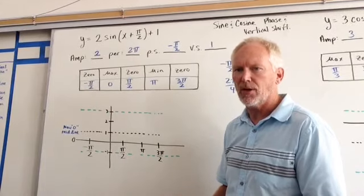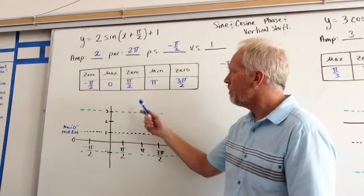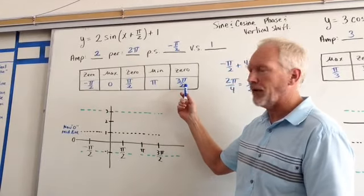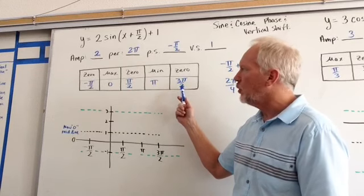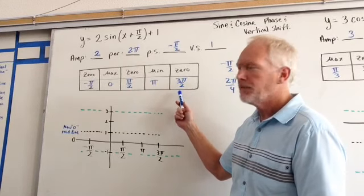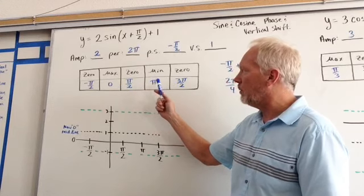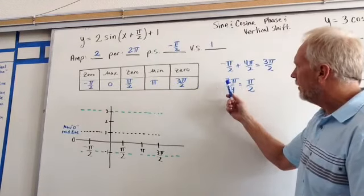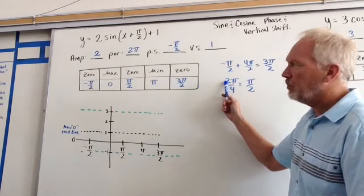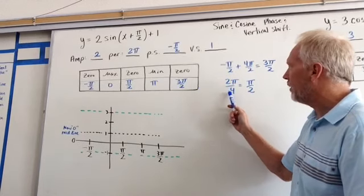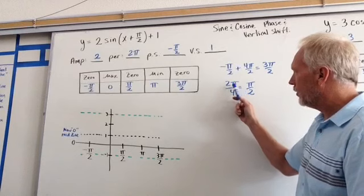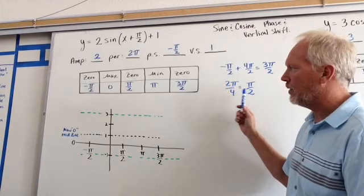The last point here is your phase shift plus your period. Your maximum, 0, and minimum can all be found if you take the period, divide it by 4, and you get pi over 2.